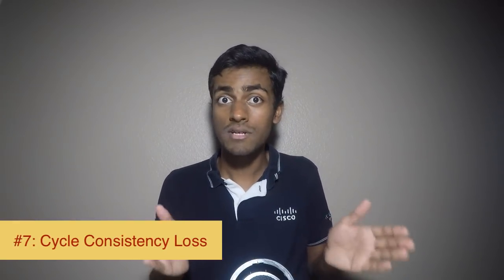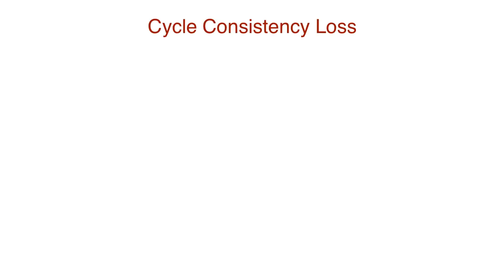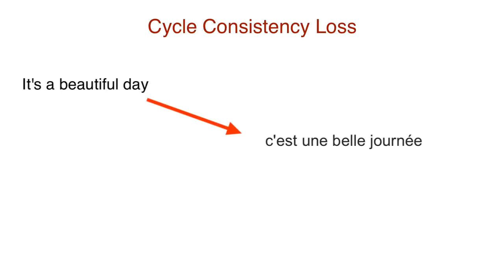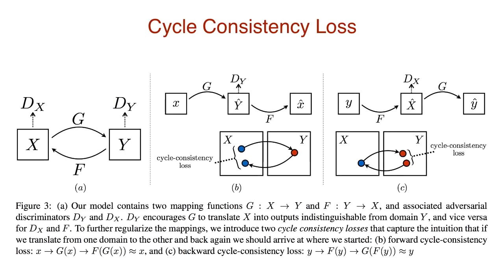In order to reduce the number of possible mappings G that can be learned, we introduce a second type of loss called cycle consistency loss. Here's the idea: if we translate a sentence from English to French and then translate it back from French to English, we should arrive back at the original sentence. In our image-to-image translation problem, we introduce another mapping F, which is the inverse of G — it maps an image in Y to some image in the X domain. So we not only need a mapping G that generates a similar distribution, but also one that is cycle consistent with respect to its inverse mapping F. This significantly reduces the number of possible mappings G can take.